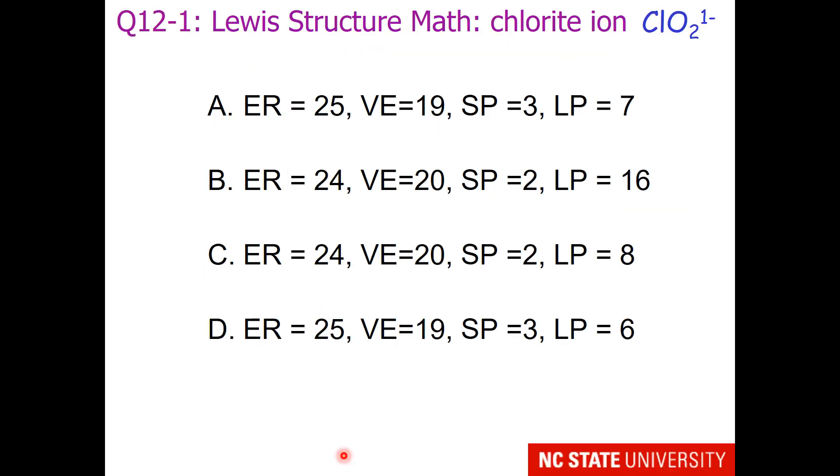If you're not sure how to answer these questions, you might want to go back and look at the previous lecture on Lewis structures. I am going to remind you that when you calculate your valence electrons, do not forget to include the charge. It would be valence electrons minus the charge. This structure has an additional electron with it. It has a minus 1 charge, so we should include that in the valence electrons.